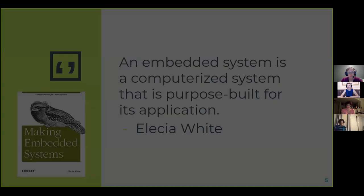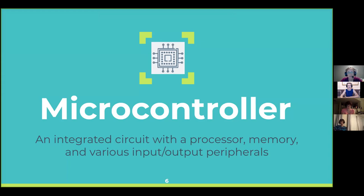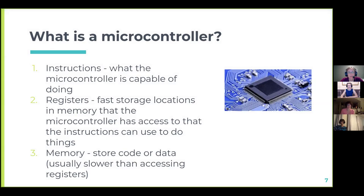Central to the embedded system is the microcontroller — the brain of the operation. It's really just a circuit: it has a processor, memory, and the ability to interact with other things through input/output peripherals. Those are usually just the pins on the microcontroller that you connect to in order to do other things. That black square in this picture is the microcontroller, and you can see the little silver pins coming off of it, connected to all the other circuits on the blue board.